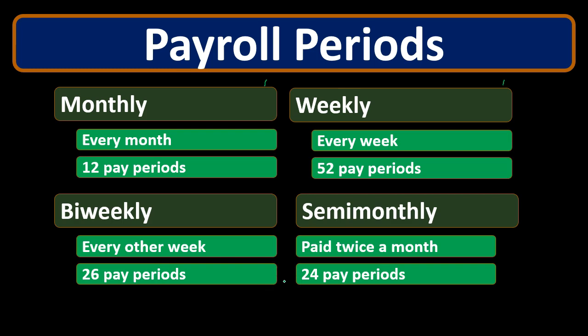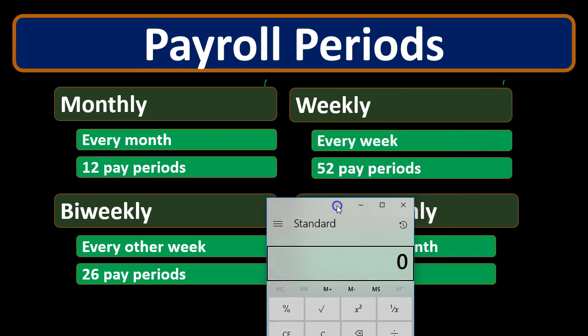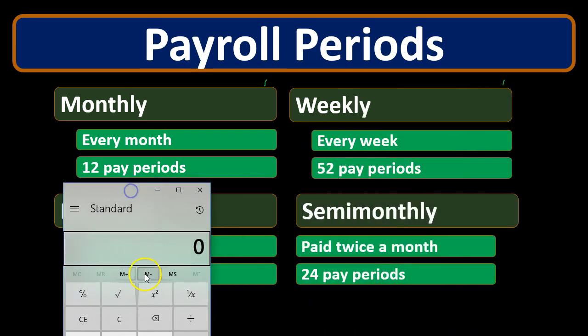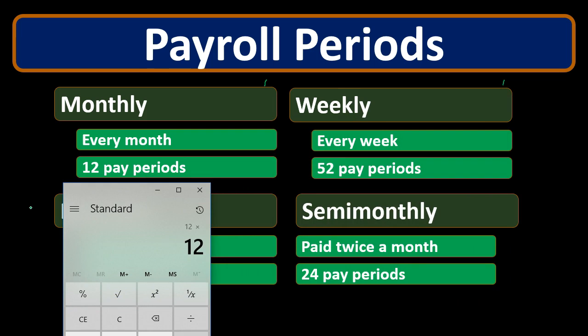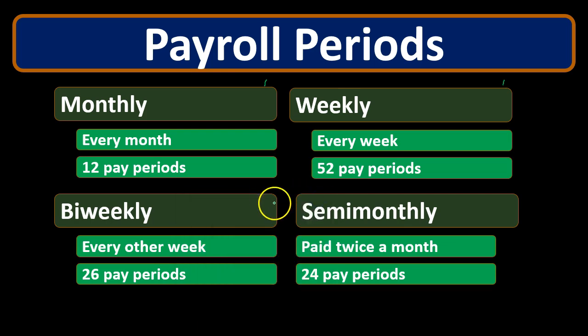If we pay two times a month no matter what — in the middle of the month and the end of the month — then that's two times a month, which is of course 12 times 2, or 24. This is important because we will be using these pay periods when we start to calculate things like hourly rate and payroll rates.